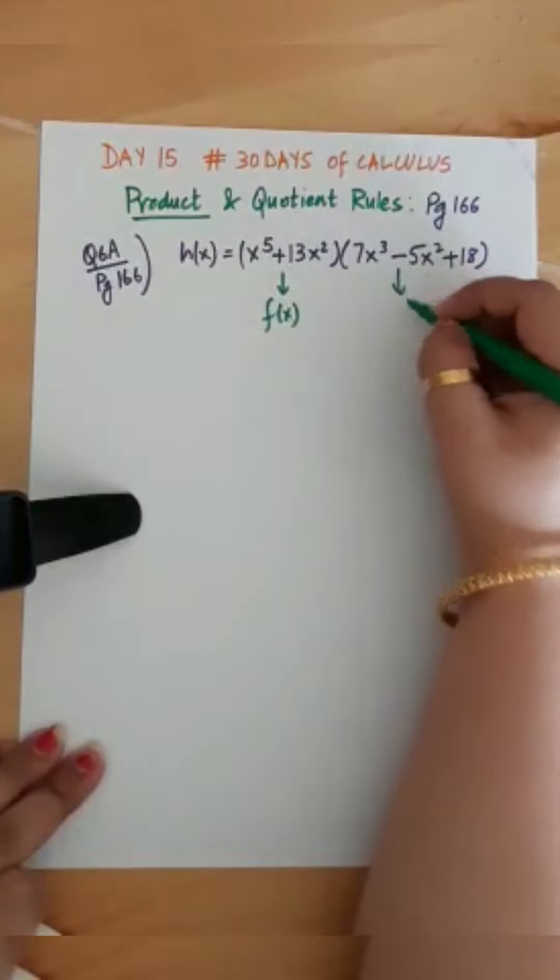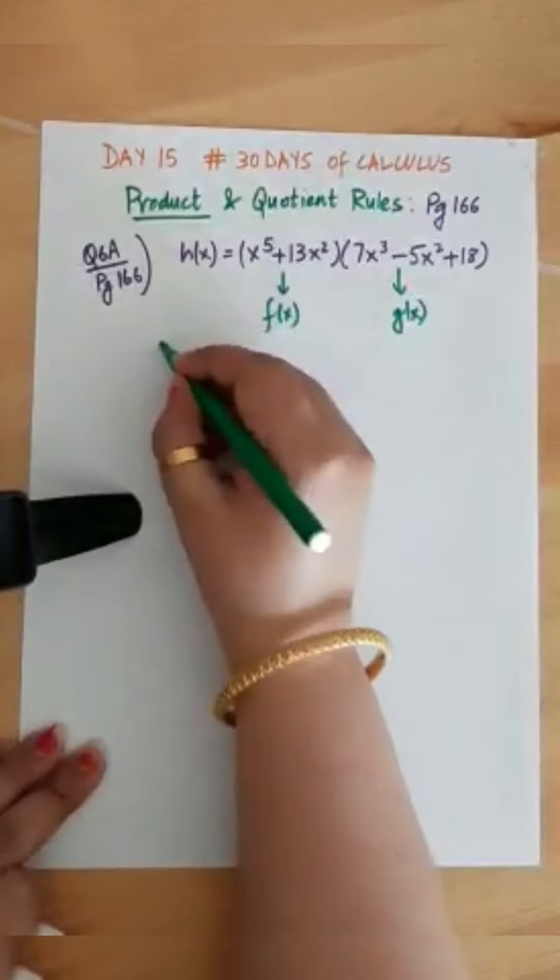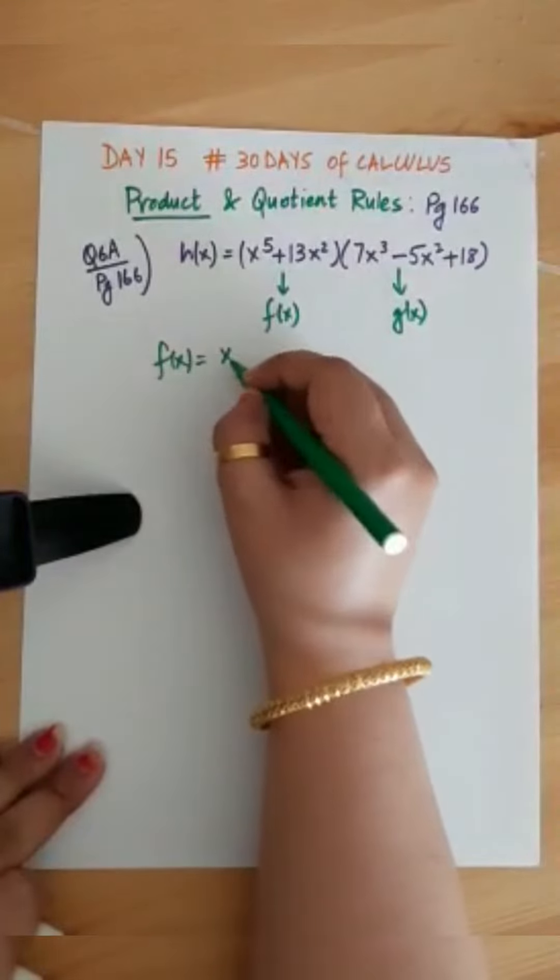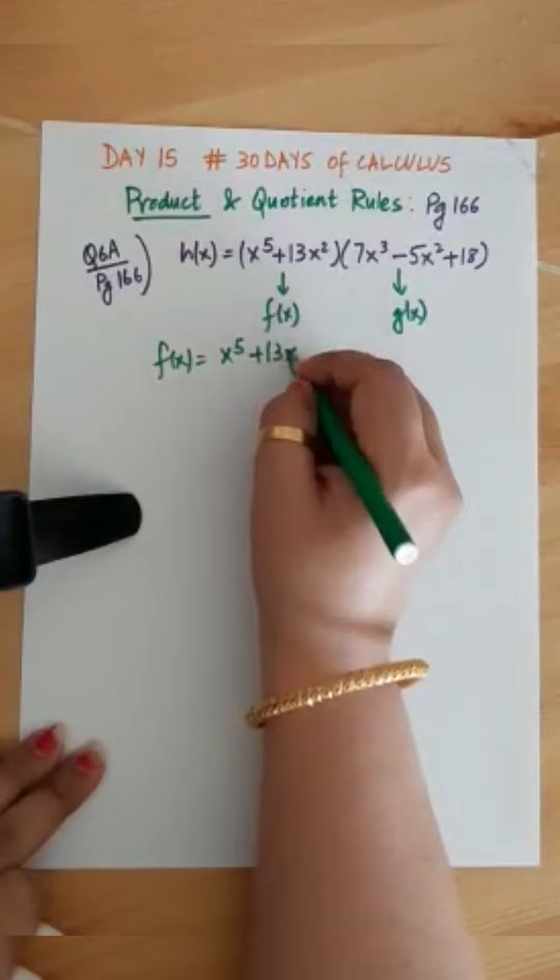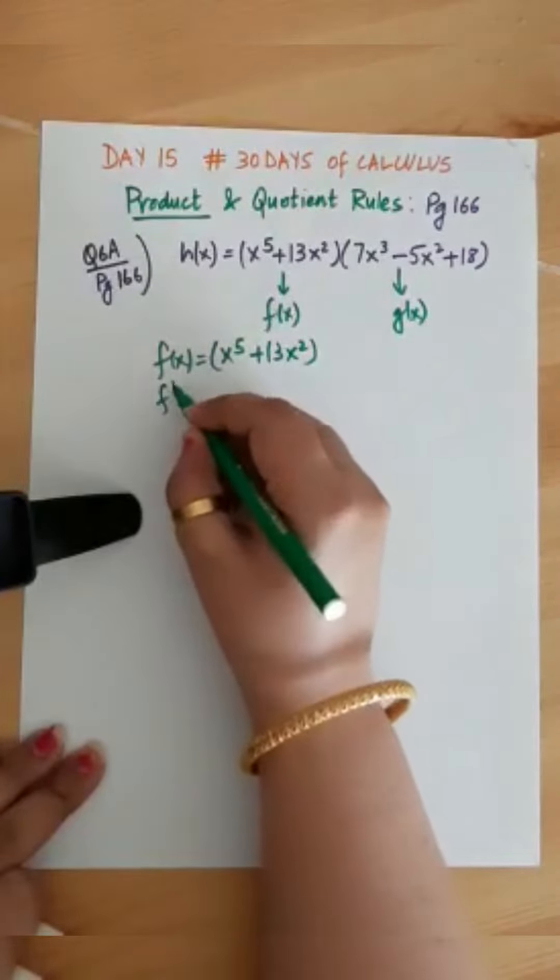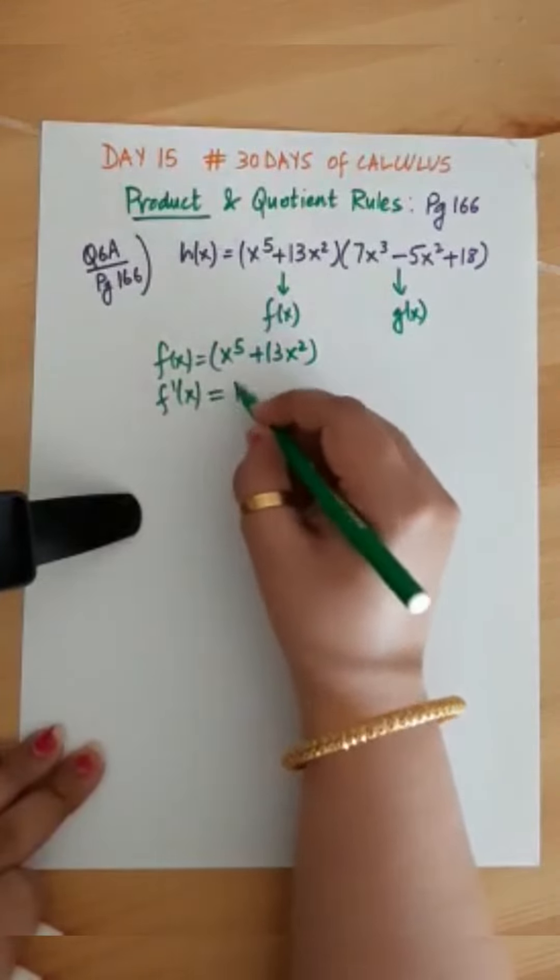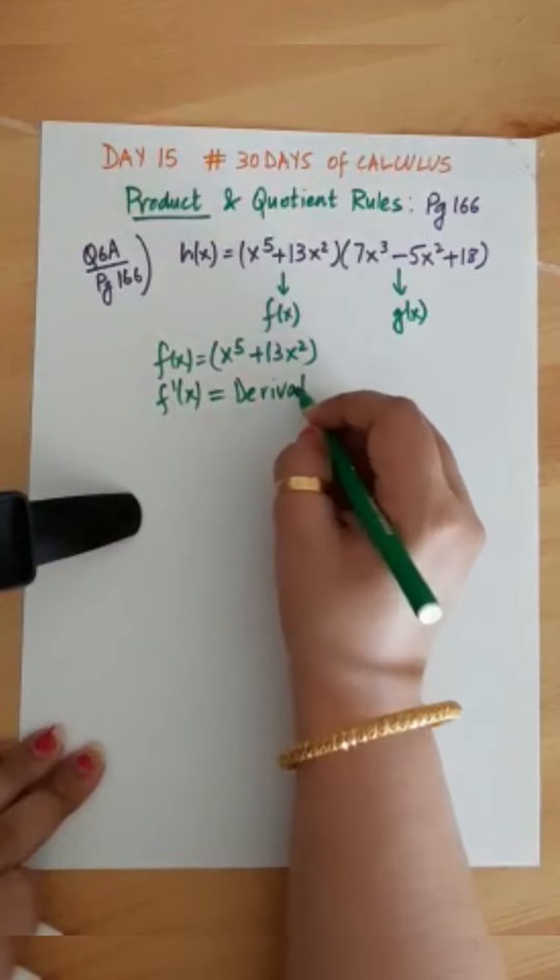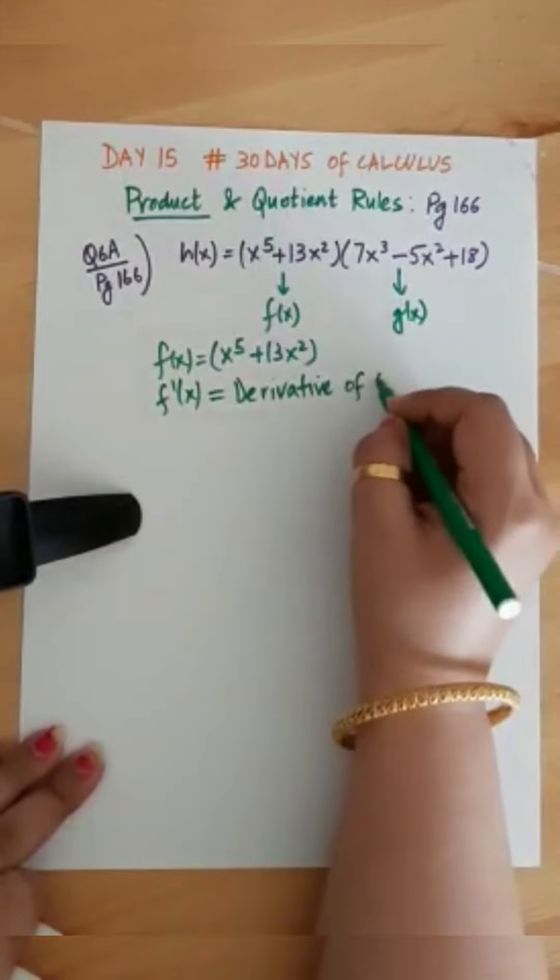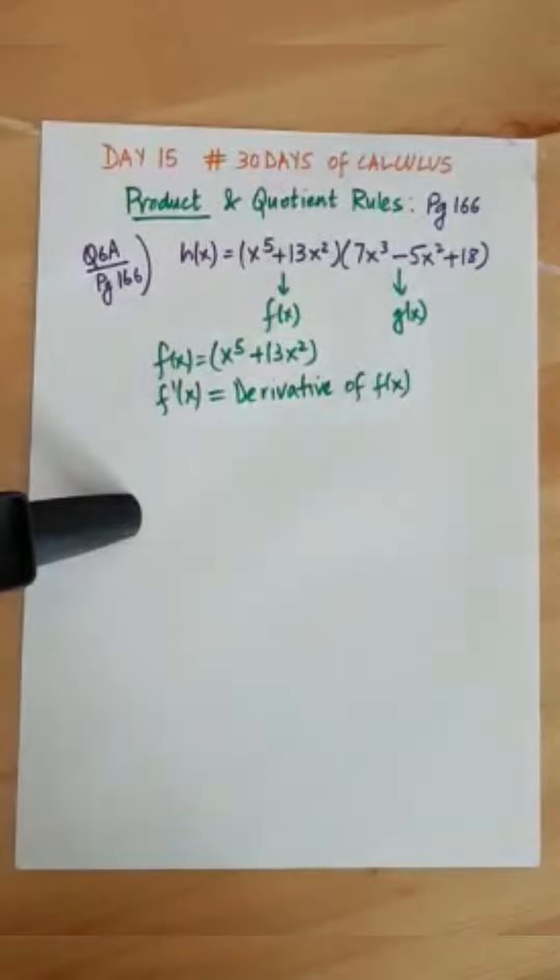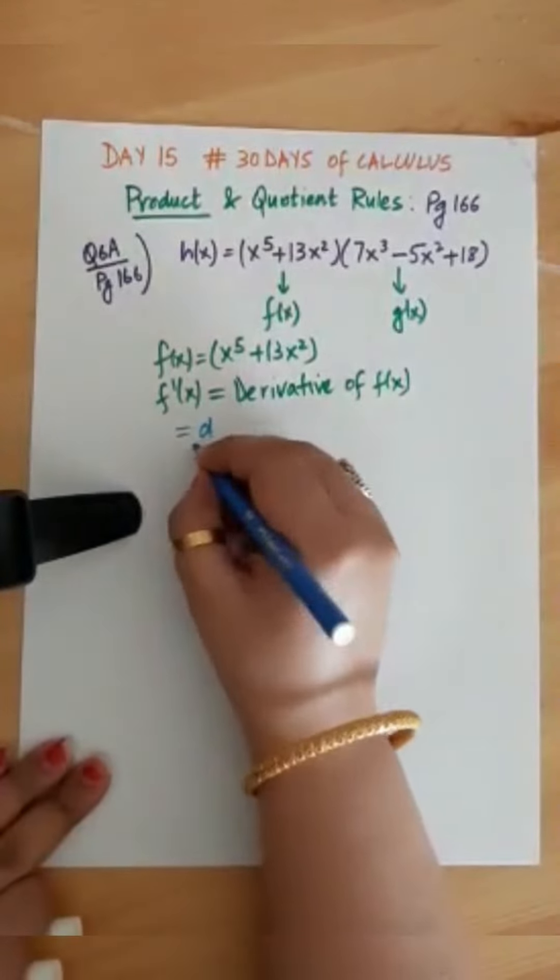You are given two functions f(x) and g(x) whose product is a new function h(x). Let's write the function individually: f(x) is x to the power 5 plus 13x square. Its derivative by applying power rule is 5x to the power 4 plus 26x. So f prime of x here denotes the derivative.